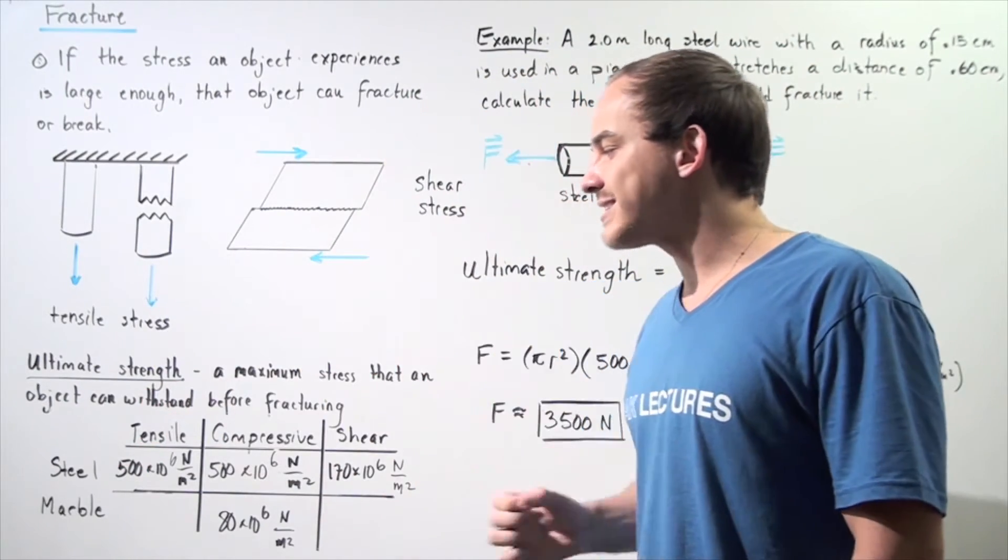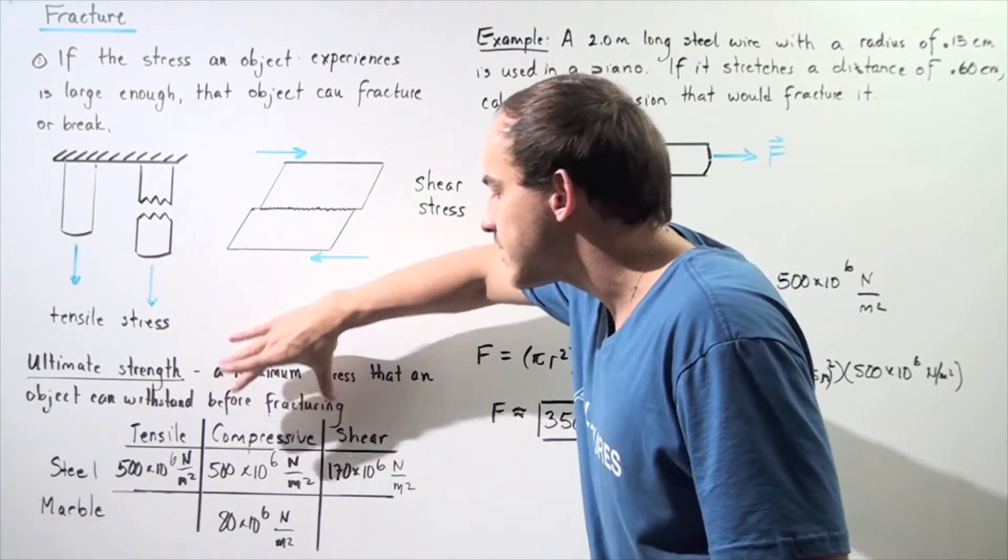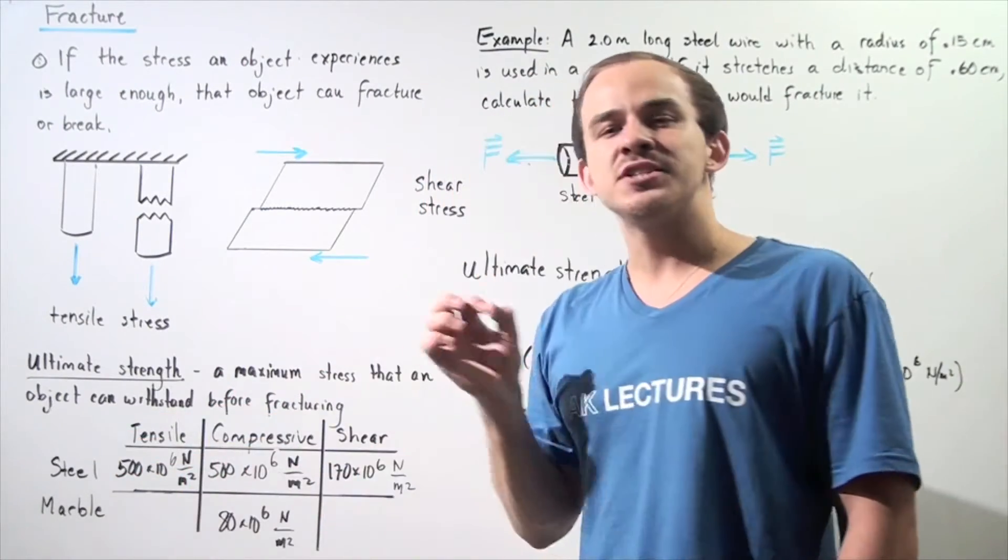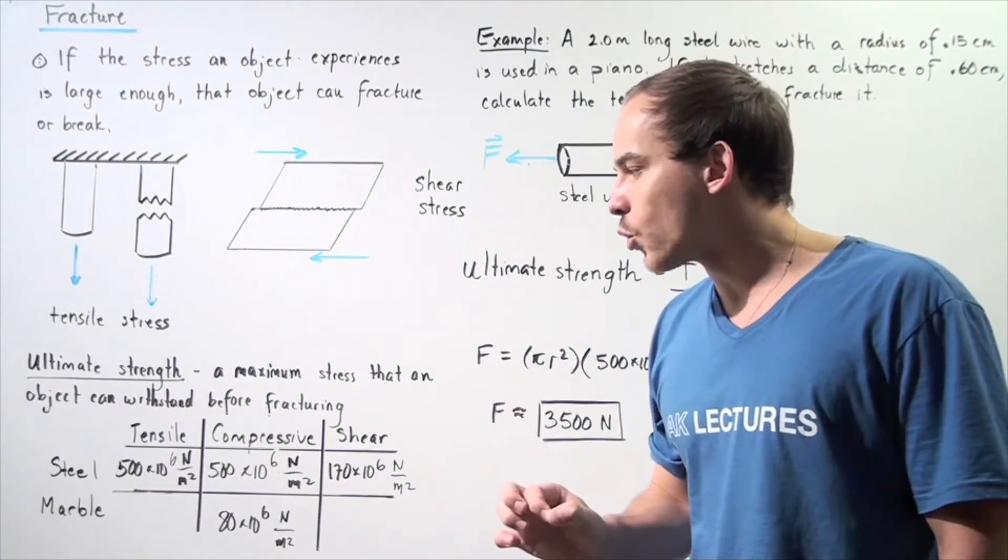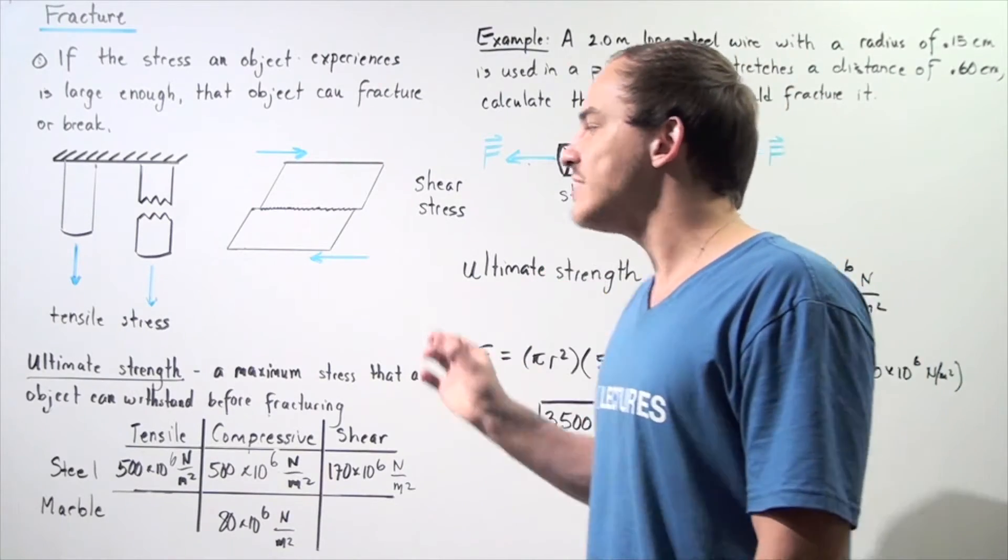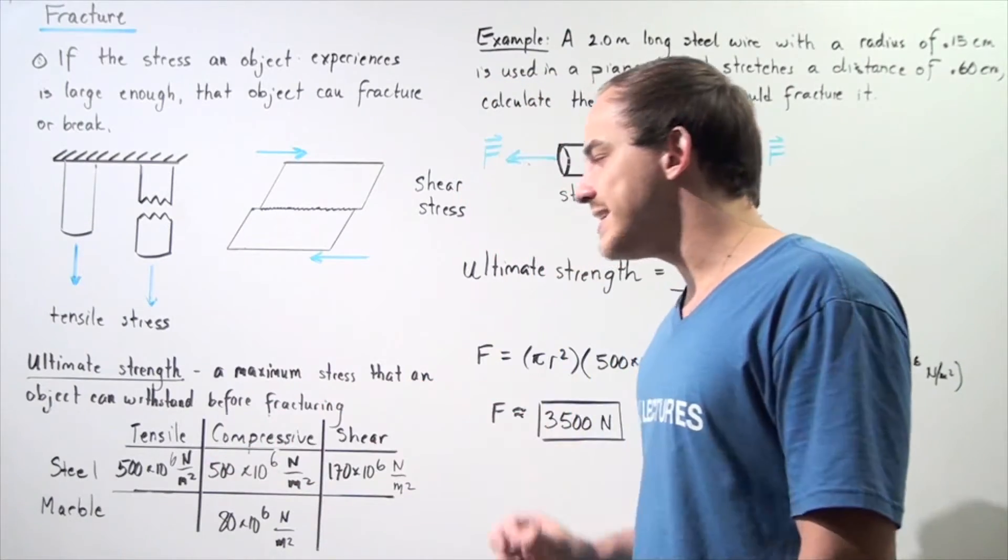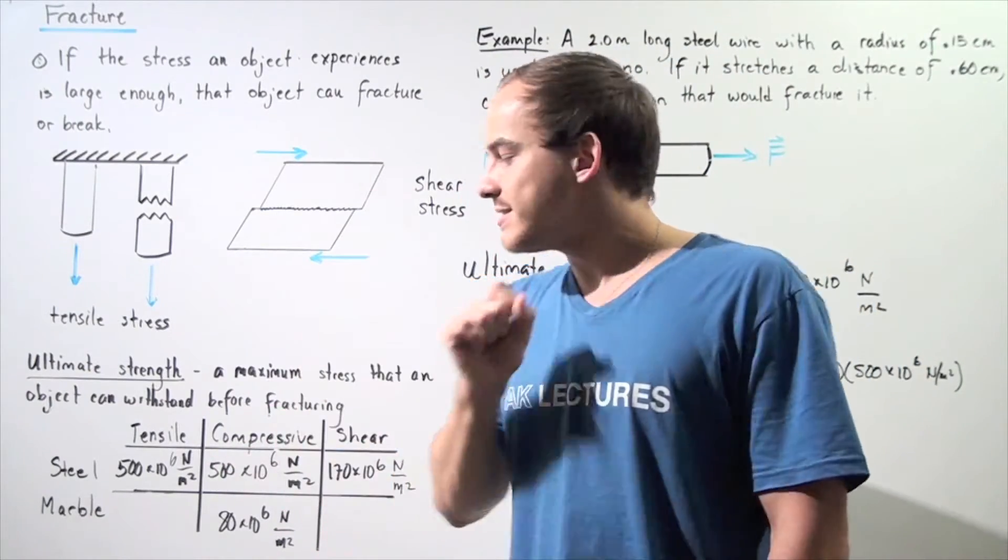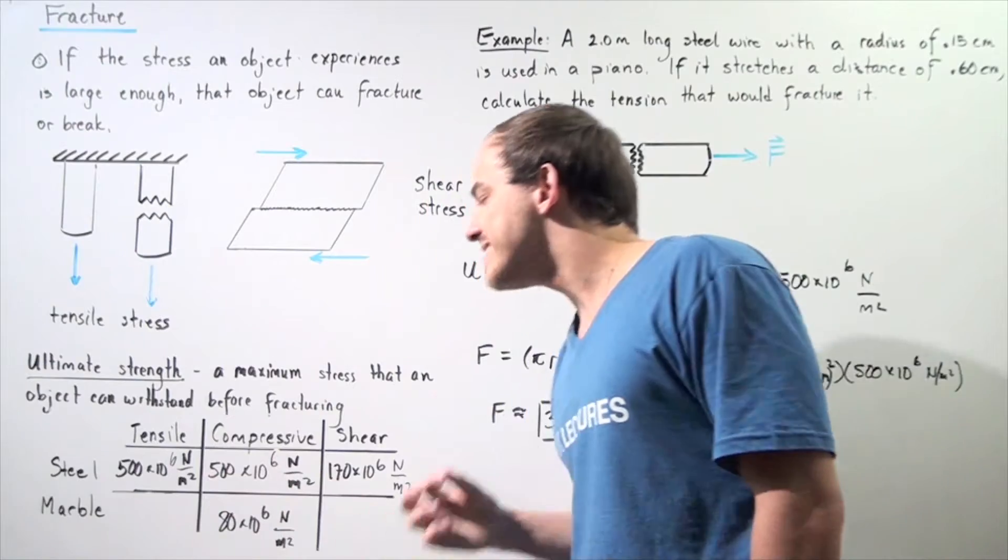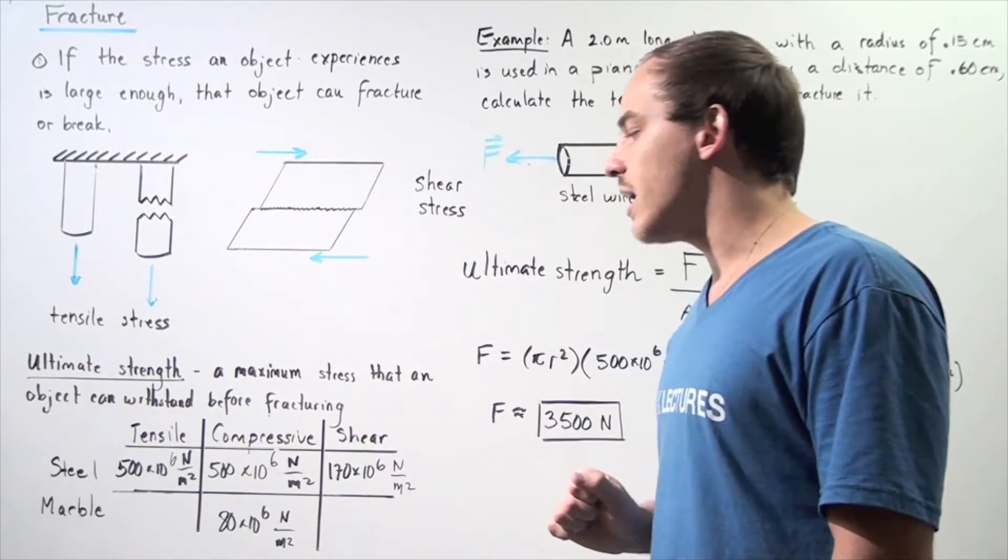So let's compare and contrast steel objects and marble objects and let's look specifically at compressive stress. The compressive stress for steel is 500 times 10 to the 6 newtons per meter squared. In other words, if we have a steel column and the steel column experiences a compressive stress value that exceeds this quantity, that steel column will break. The same is true for a marble column. Notice that a steel column is able to withstand a higher compressive stress value than a marble column can.